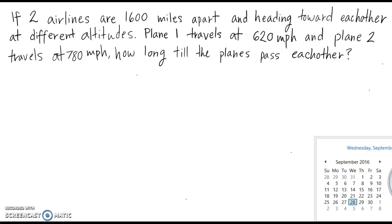Let's say plane 1 is traveling at 620 miles per hour and plane 2 is traveling at 780 miles per hour. How long till the planes pass each other?